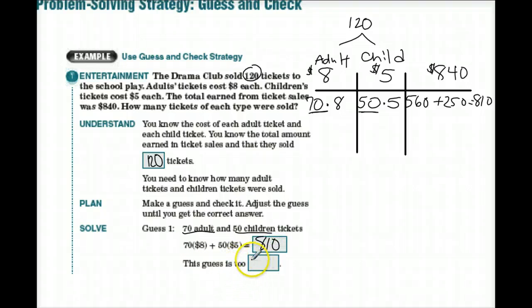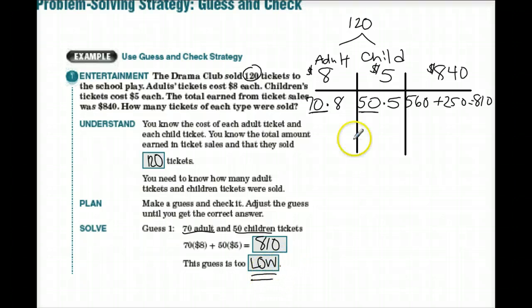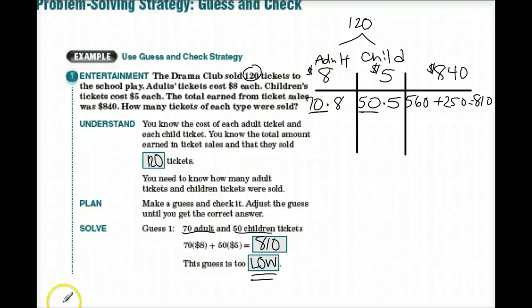So our first guess gives us $810, and that guess is too low. We need to bump one of these up — probably going to bump up the adult ticket count since it costs more.